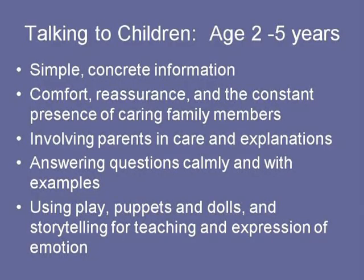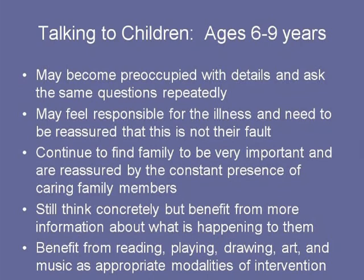For children ages 2 to 5, give very simple concrete information with comfort and reassurance, and always have family members present. Involve parents in care and explanations, answer questions calmly with examples, and use play therapy, puppets, dolls, and storytelling for teaching and expression of emotion. For the older school-age group (around 9-10), they may become preoccupied with details and feel responsible for the illness — reassure them it's not their fault. Family is still very important at this age. They benefit from more information and from reading, drawing, art therapy, and music therapy.